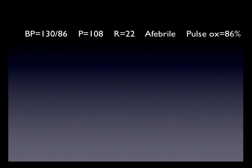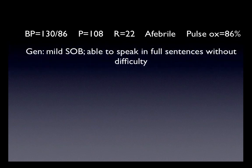His vital signs are as follows: blood pressure 130 over 86, a pulse of 108, respirations 22, he's afebrile, with a pulse ox of 86% on 2 liters per minute nasal cannula. His general appearance is that of a patient with mild shortness of breath, which is different than how he was just a few hours ago. He's able to speak in full sentences without difficulty, but clearly has some shortness of breath that was not there previously.